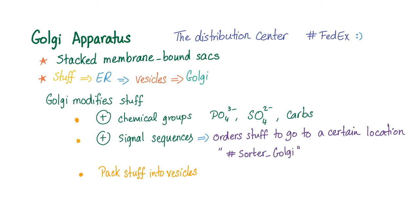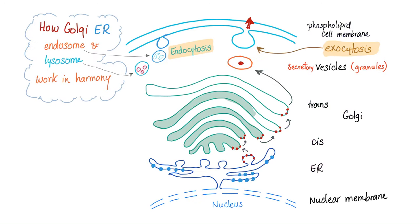The Golgi adds signal sequences to direct molecules to specific locations — that's why we call it the sorter — and it packs stuff into vesicles. Here is the nucleus, in continuation with the rough endoplasmic reticulum. Small molecules are sent to the Golgi apparatus, flowing through what we call the cis Golgi to the trans Golgi.